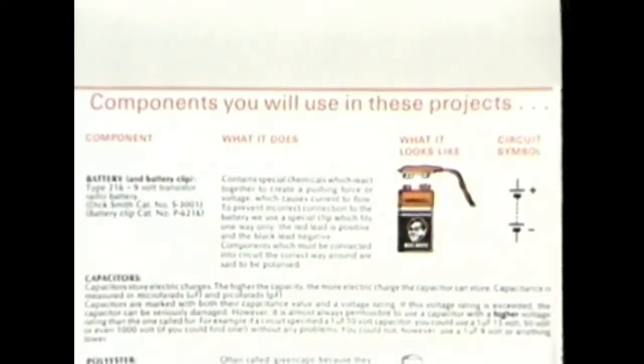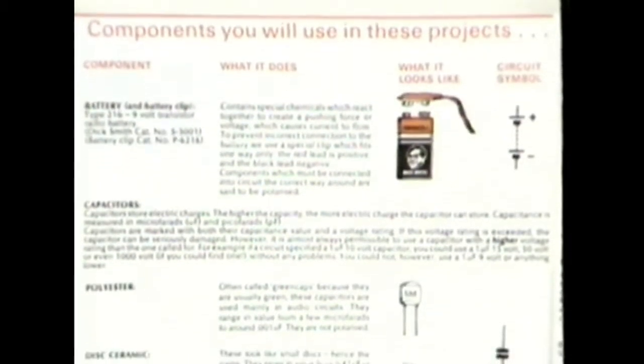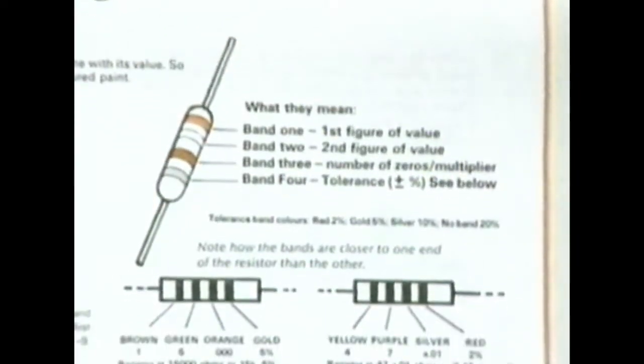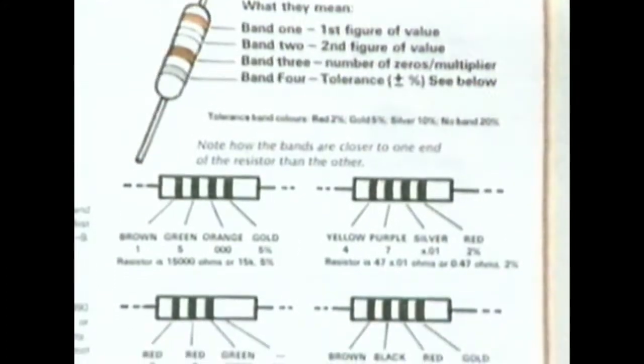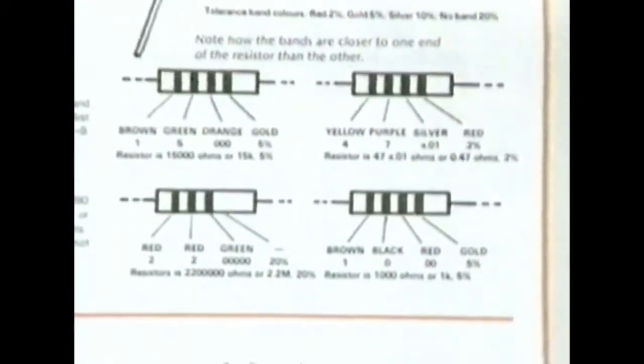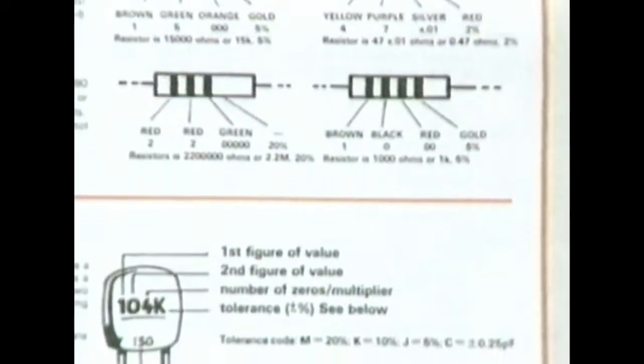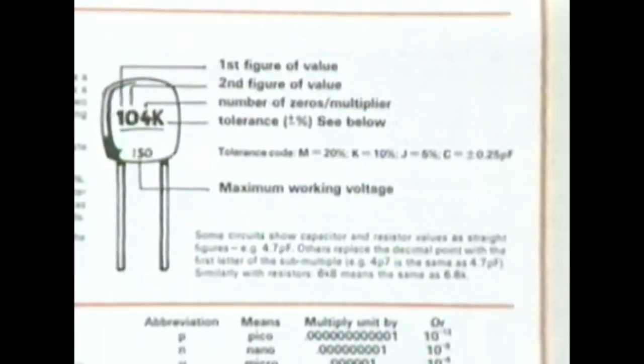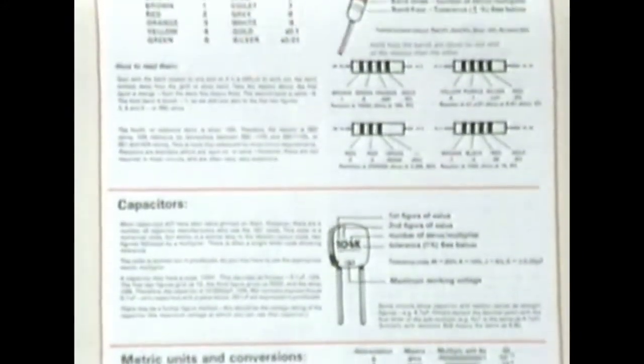I've only skimmed over what each component does, how it works, and what symbols are used to represent it — because the first few pages of the book do all this in much more detail. It's really worth studying this section thoroughly before you actually start building. As well as recognizing what each component is, we have to identify its value — how much resistance does it provide, what capacity is it? That's covered in the section on component marking codes, where the color bands, dots, letters and figures found on different components are fully explained.